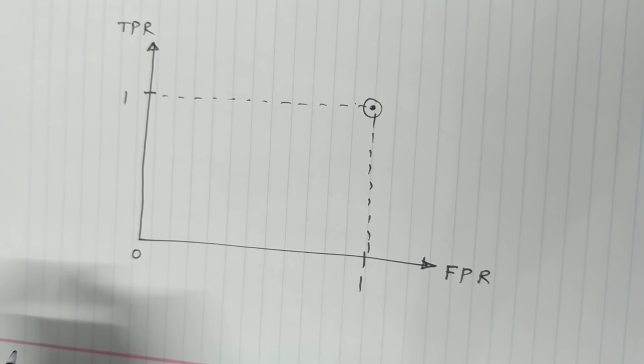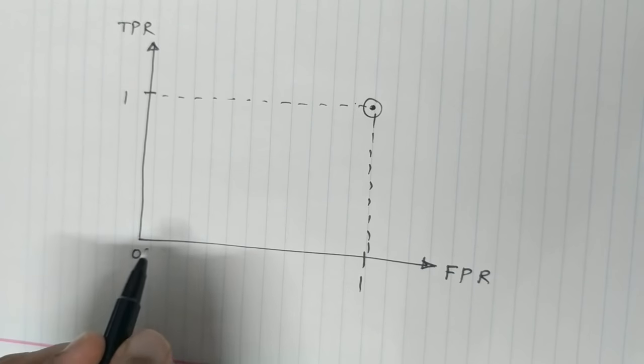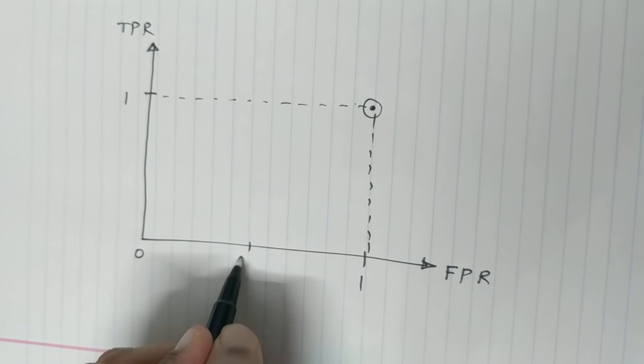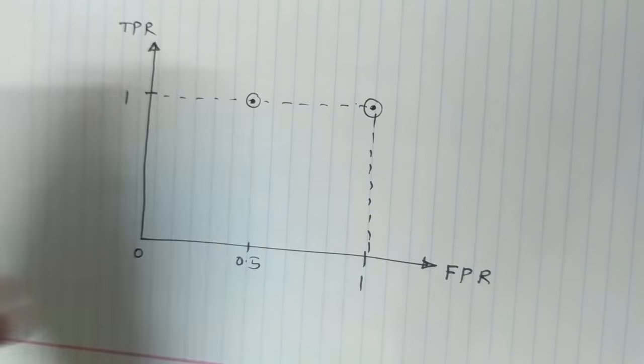At threshold 0.4, I had a TPR of 1 and an FPR of 0.5. So this value is somewhere here.